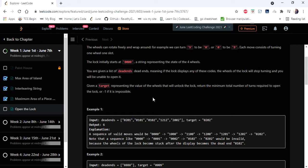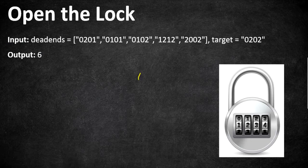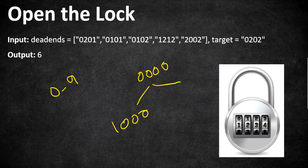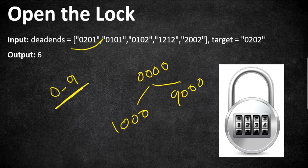Let's understand this problem statement with an example. Our lock starts from state 0000 and you can rotate the lock either clockwise or anti-clockwise — digits go from 0 to 9. If you rotate the first wheel one step clockwise it becomes 0100, or anti-clockwise it becomes 9000. You can move one wheel at a time at each step. If you reach any state listed in the dead ends, the lock is locked and you cannot proceed further.